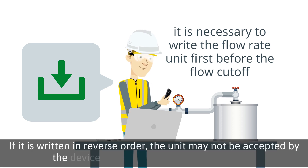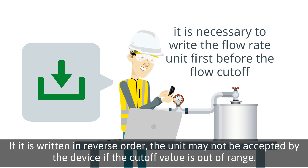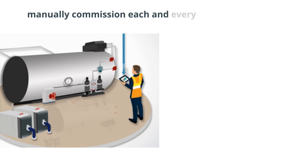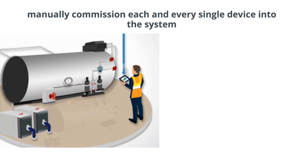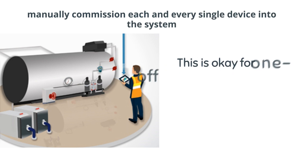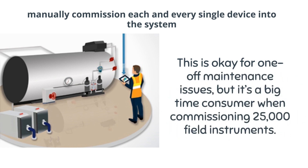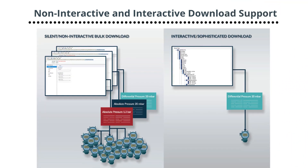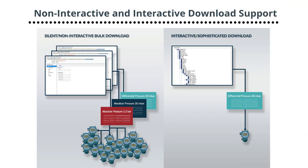Once configured and connected, previously a user would need to manually commission each and every single device into the system. This is okay for one-off maintenance issues, but it's a big time consumer when commissioning 25,000 field instruments. Enter non-interactive download. Non-interactive download standardizes the download process to support silent bulk download that requires no user interaction, potentially saving days or weeks plus man-hours in the commissioning process.